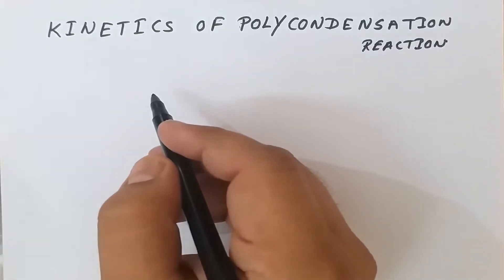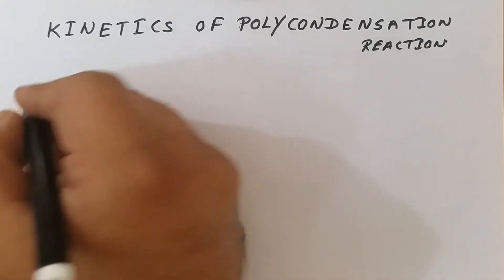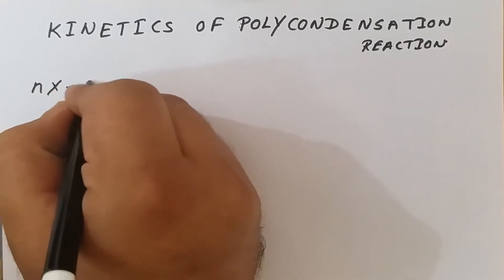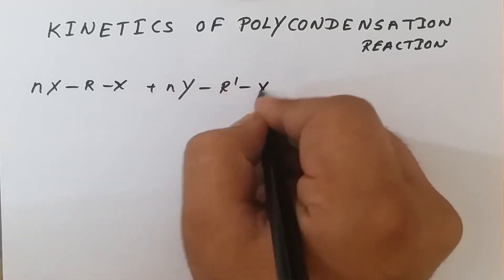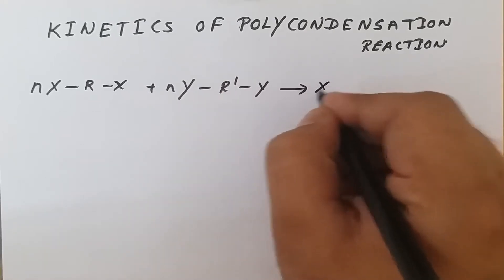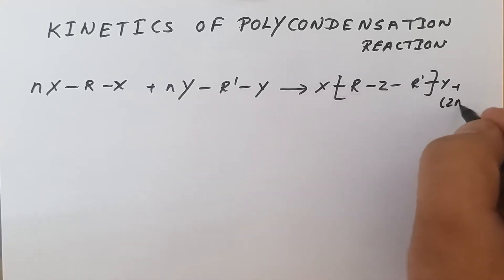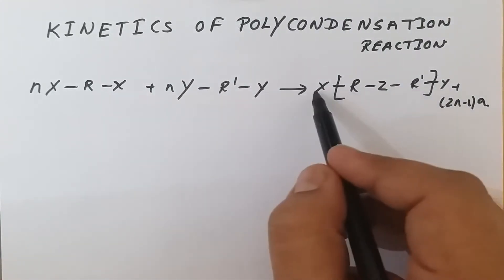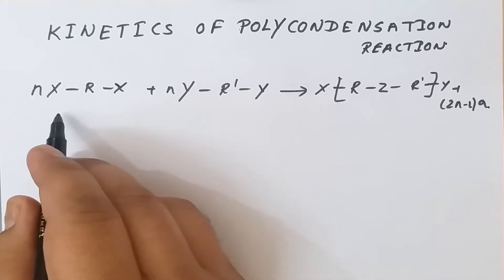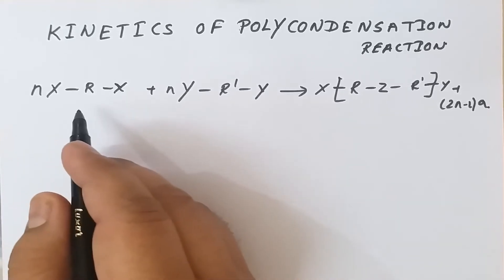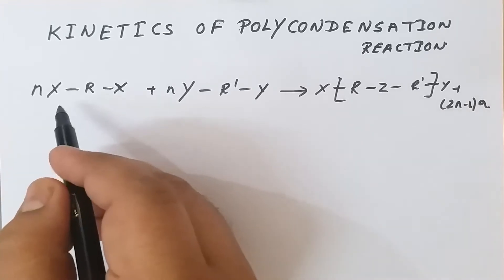The general polycondensation reaction can be written as: n·X–R–X + n·Y–R'–Y → polymer with new functional group Z and by-product A. The polycondensation reaction can be carried out either with a catalyst or without one, and the kinetics will differ in each case.